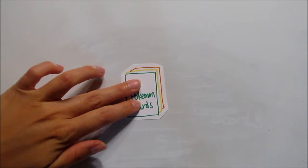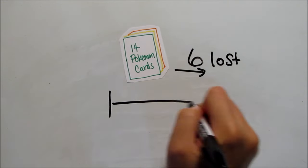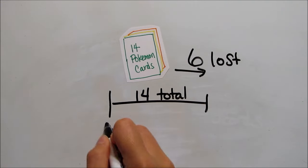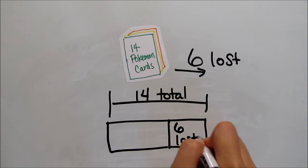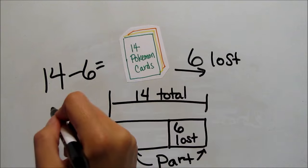Here's another example. If Bethany had 14 Pokemon cards and she lost six of them, then the 14 cards were her total and the six that she lost were part of the total. If we want to know how many Pokemon cards she still has, we can separate the six that were part of the total and find out that she still has eight Pokemon cards.